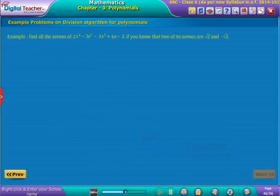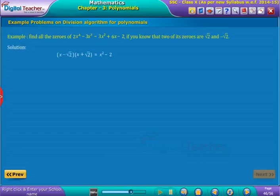Now let us solve one more example problem. Example 11: Find all the zeros of 2x⁴ - 3x³ - 3x² + 6x - 2 if you know that two of its zeros are √2 and -√2. Solution: Given that two zeros are √2 and -√2, thus it can...